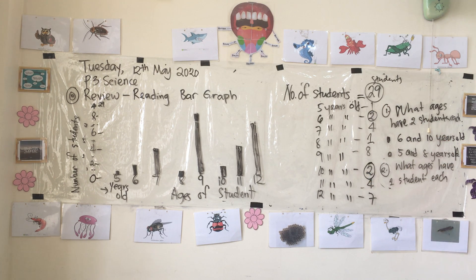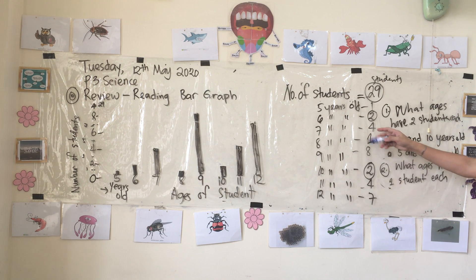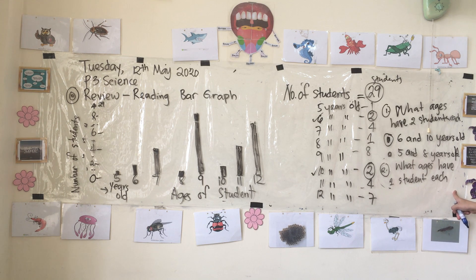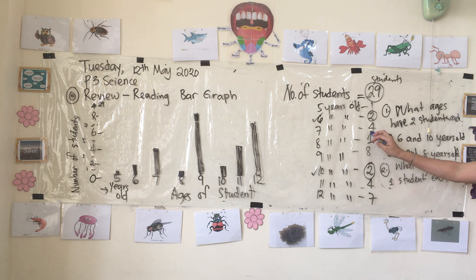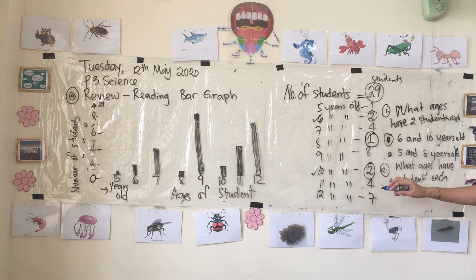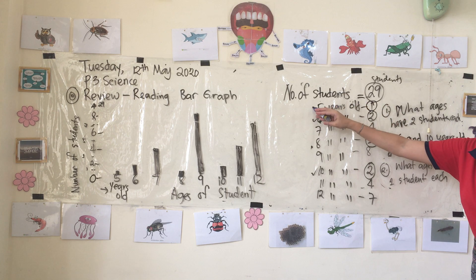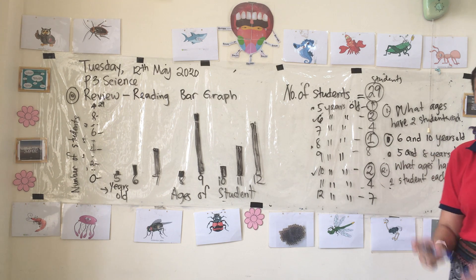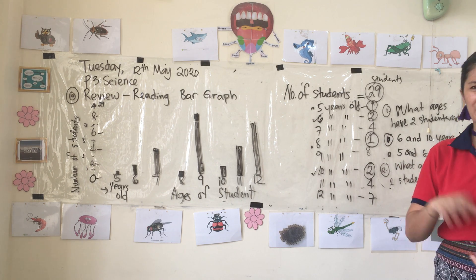How about if the question is: what ages have one student each? The answer is five years old and eight years old — both have one student each. So in the options you will see that the answer is that option. Thank you very much, have a nice day, goodbye.